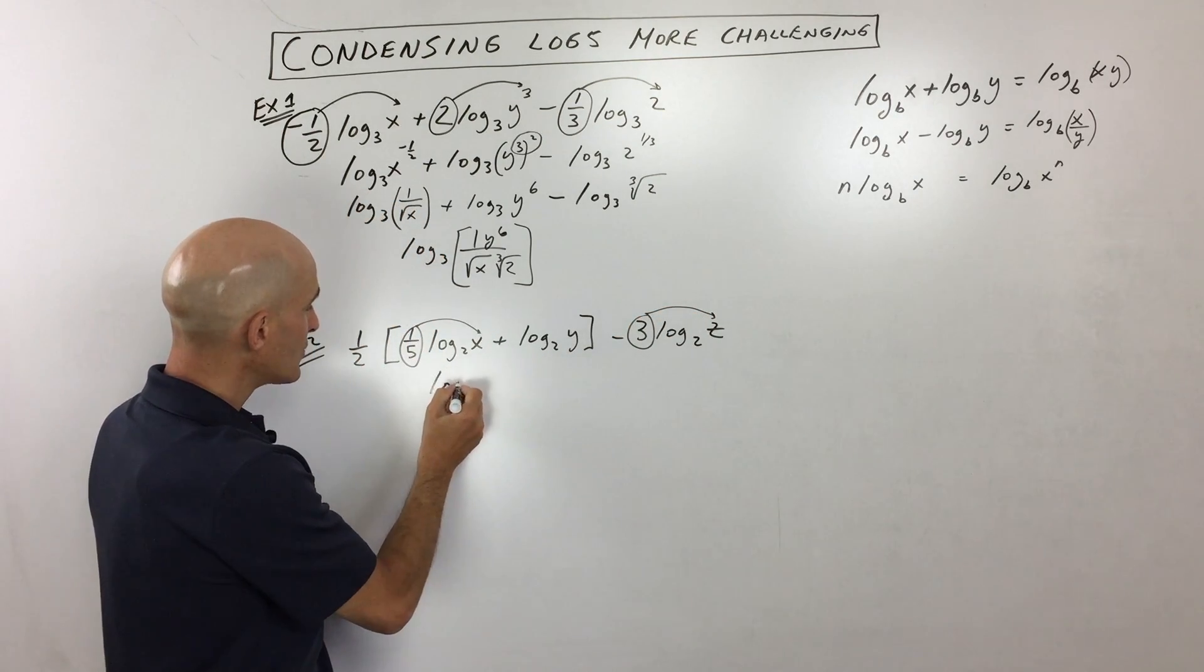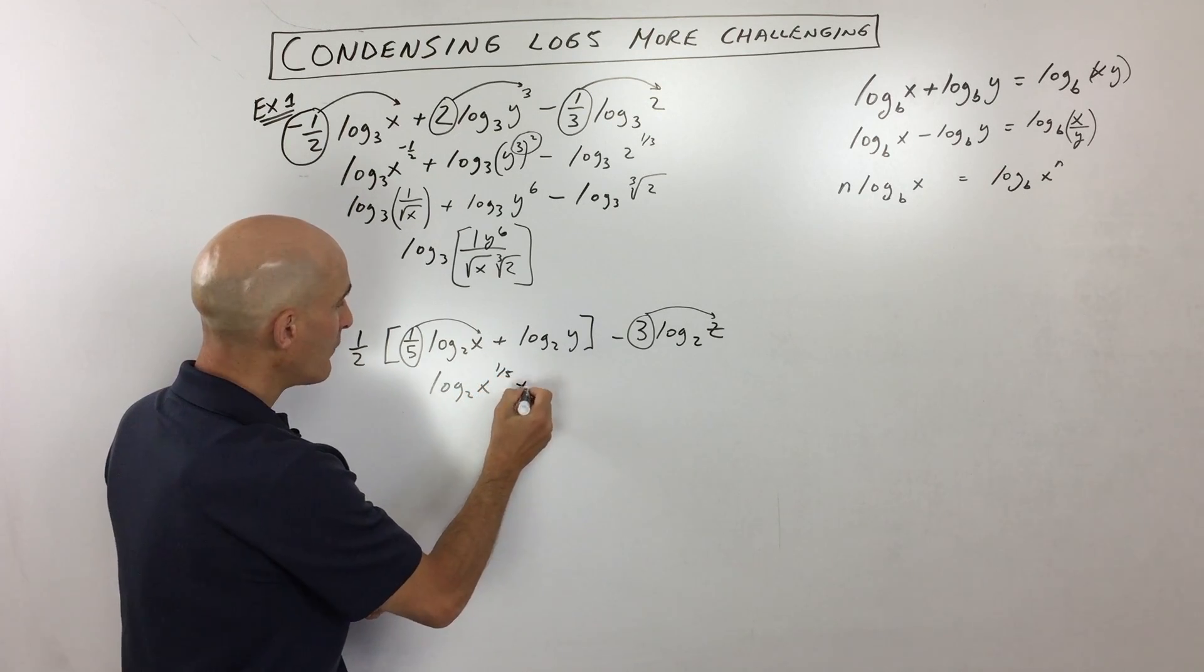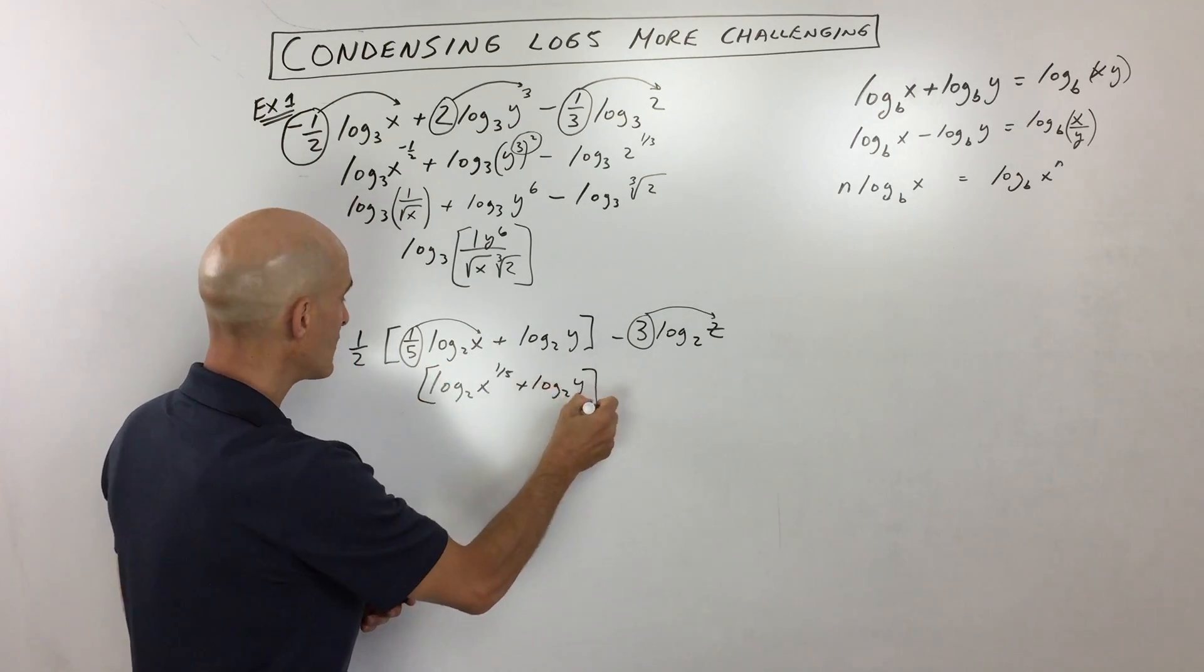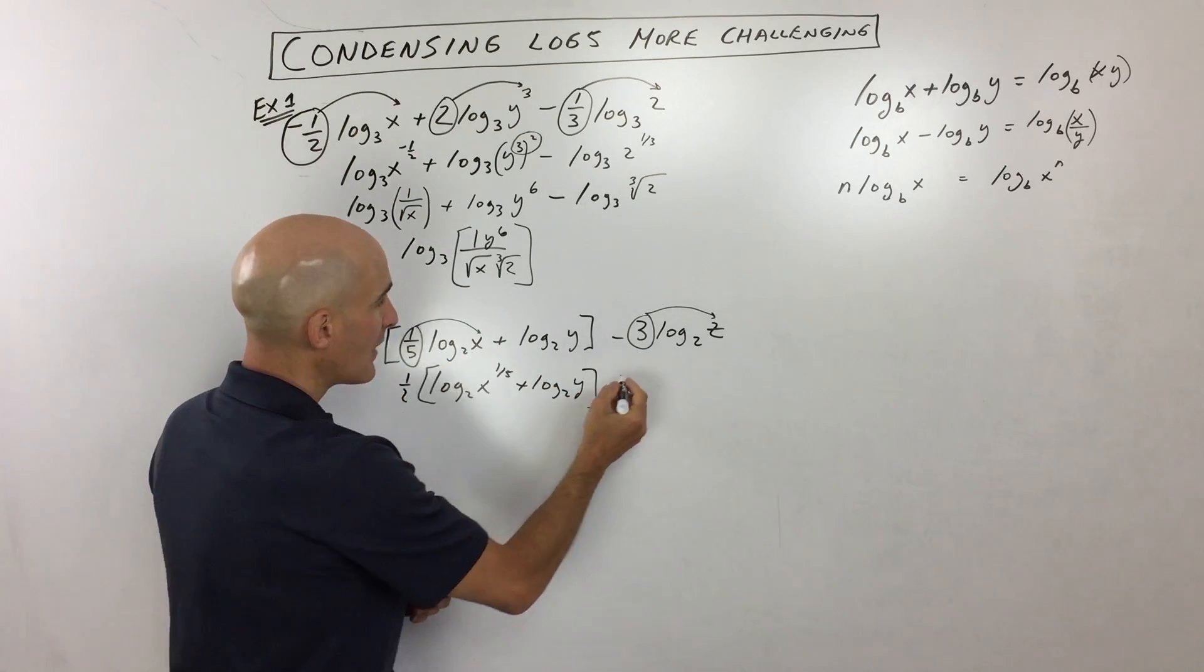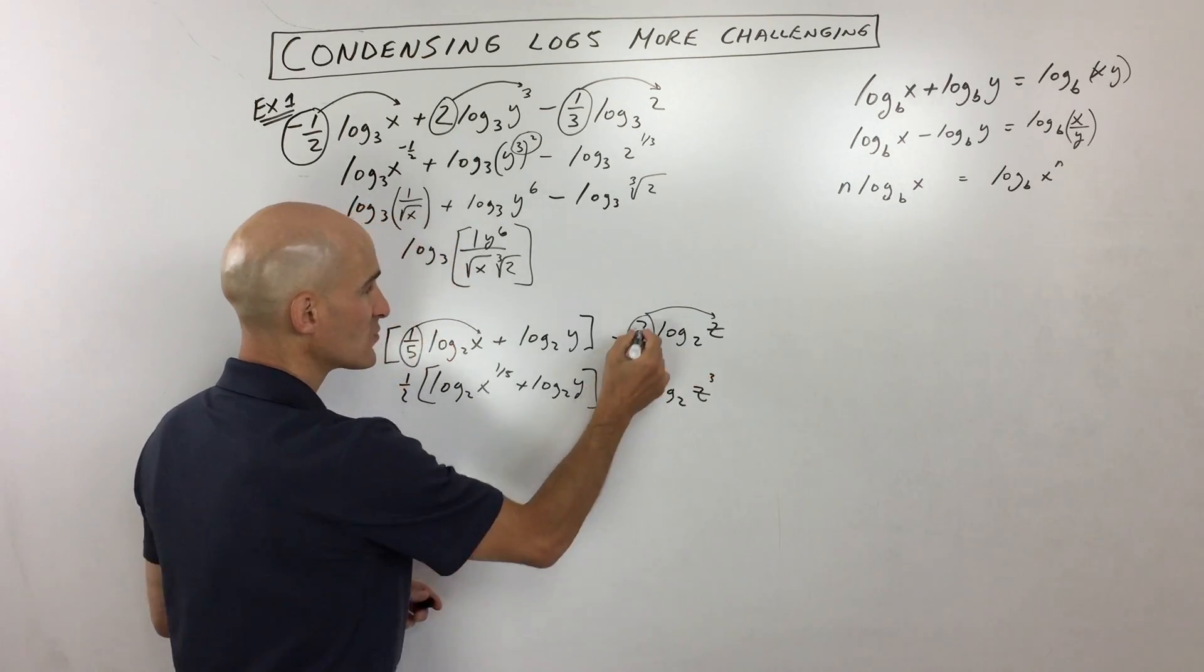So that's going to give us log base 2 of x to the 1 5th power, plus log base 2 of y, and all that's being multiplied by 1 half, and then over here, minus log base 2 of z cubed, because we brought that 3 up.